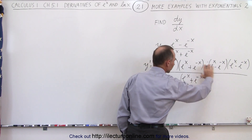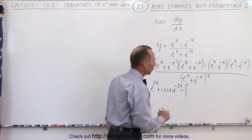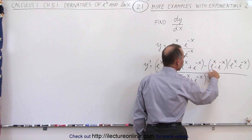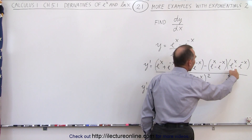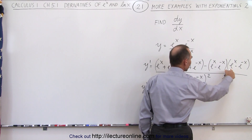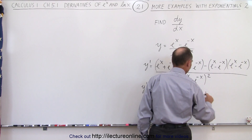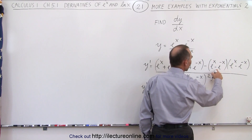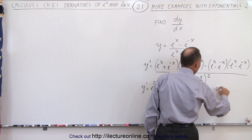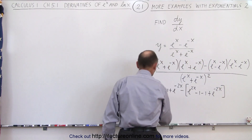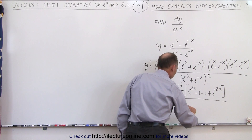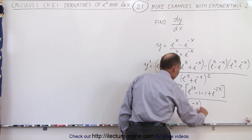Subtract from that — multiplying out the second product: eˣ · eˣ = e²ˣ; eˣ · (-e⁻ˣ) = -1; e⁻ˣ · eˣ = -1 again; and minus e⁻ˣ · e⁻ˣ becomes positive e⁻²ˣ. All divided by (eˣ + e⁻ˣ)².